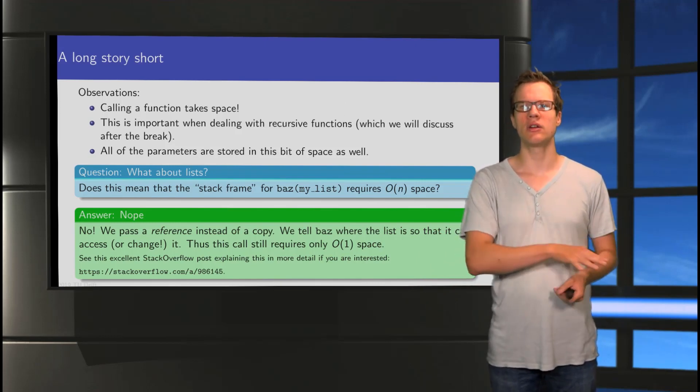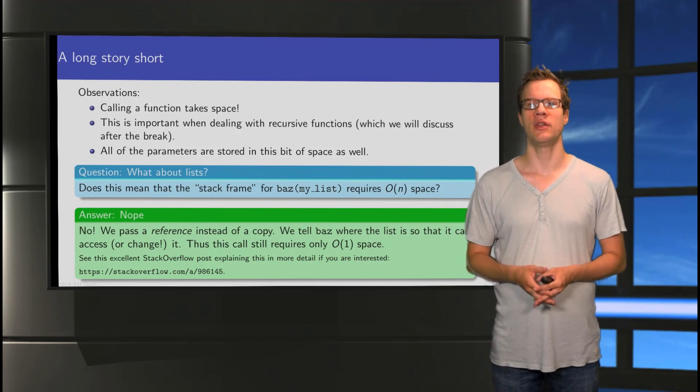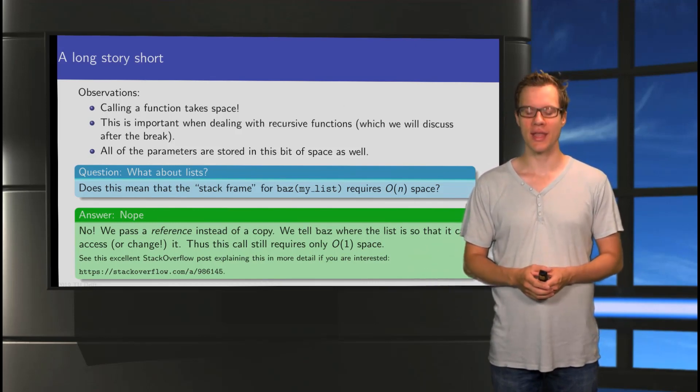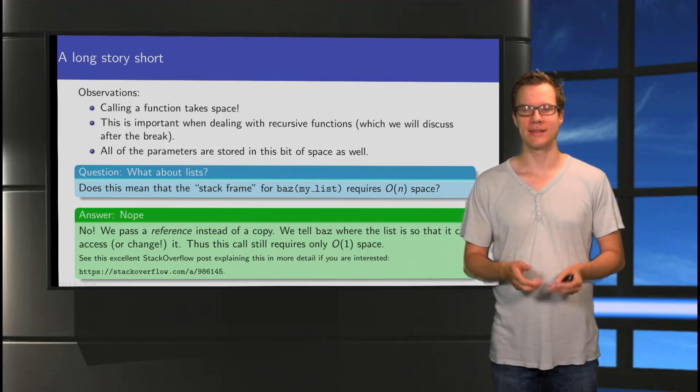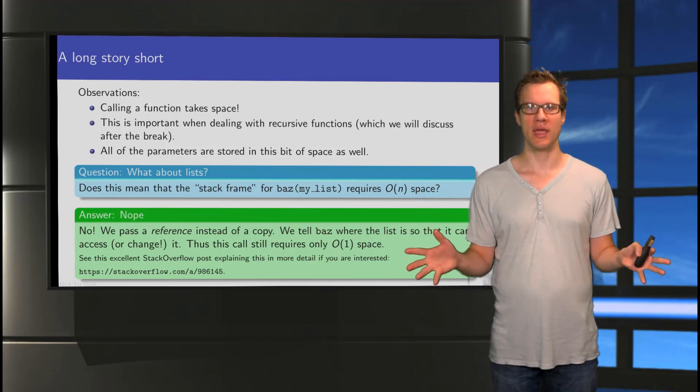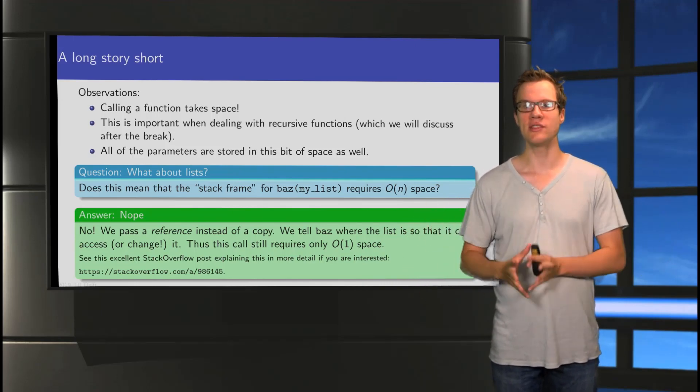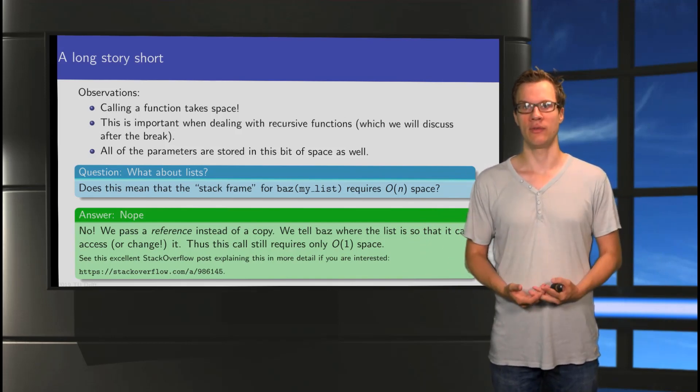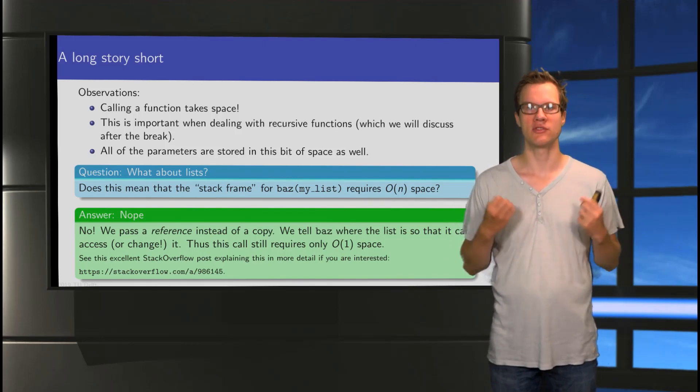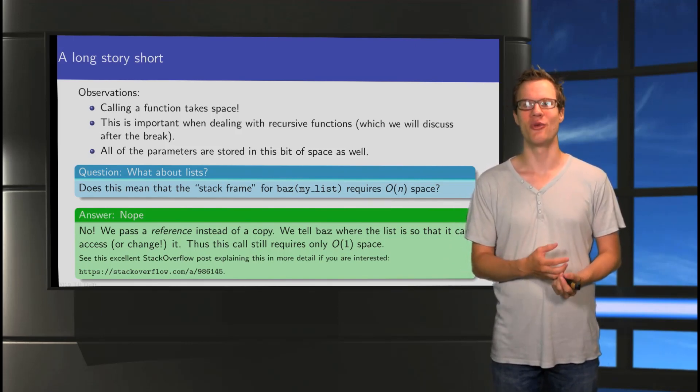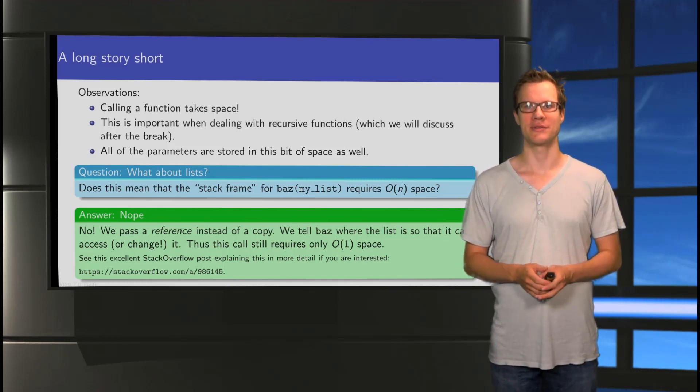And that's because rather than copying the full list and giving it to a function, we only give it a reference. So this means that even a call that takes a list as input still requires only constant space. Now, I've included a link here, also included in the description of the video, that gives you a bit more information about how this works exactly, if you're interested in that. The main thing for you to remember is that all of the parameters of the function take only constant space, which means that it's possible for a function that operates on lists to require only constant space, because the input is not part of the space complexity of the function. But again, we'll see some more examples of this when we practice with it later on.